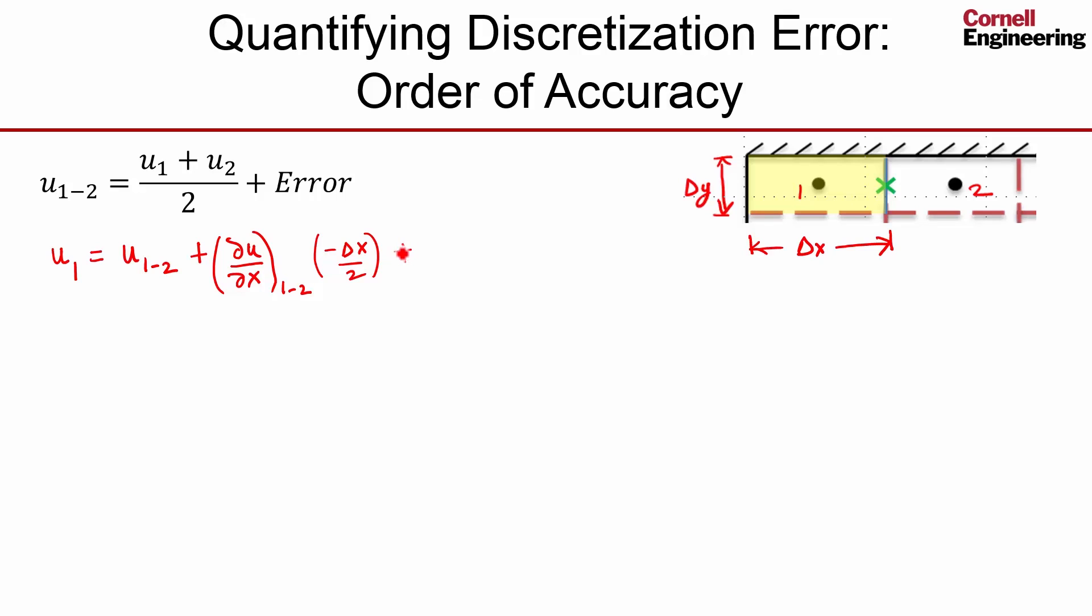That's minus delta x over 2, because it's in the negative x direction. Then the next term in the Taylor series, you have the second derivative times minus delta x over 2 squared, and then you also have a half. So I have a half here from the Taylor series expansion, plus higher order terms, so you'll get a delta x cubed term and so on. I'm not going to write the higher order terms.